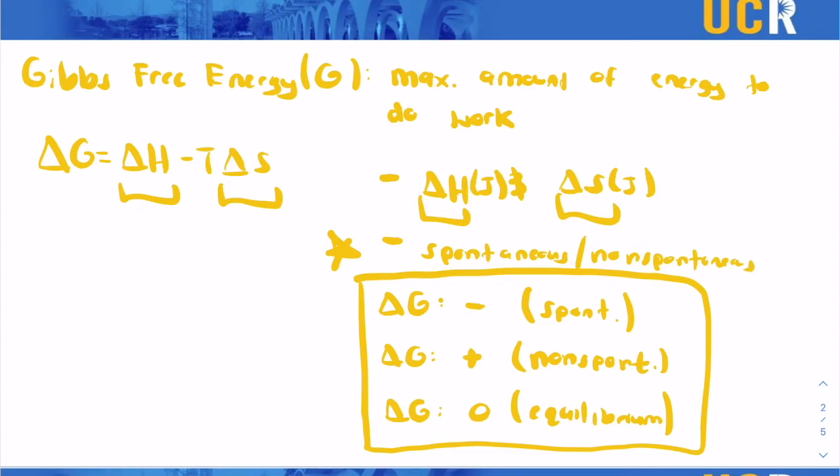And also something just a little tip to keep in mind. If you ever see delta G naught, the zero superscript, we pronounce it as N-O-U-G-H-T naught. That just means under standard conditions.